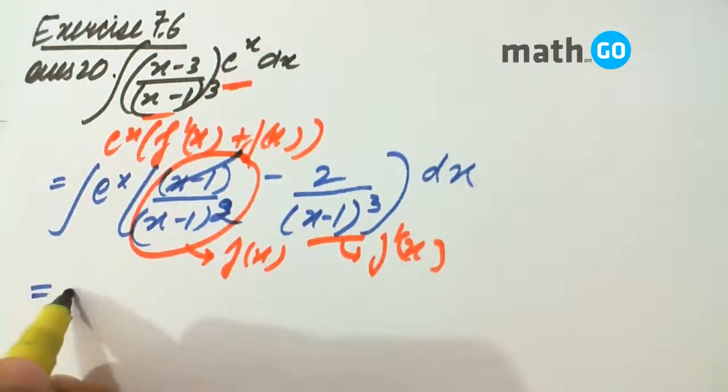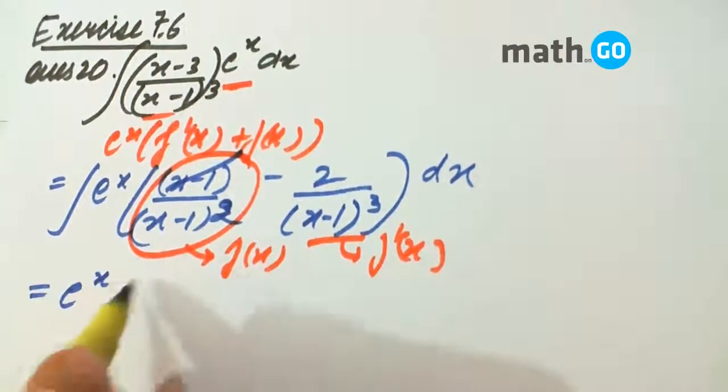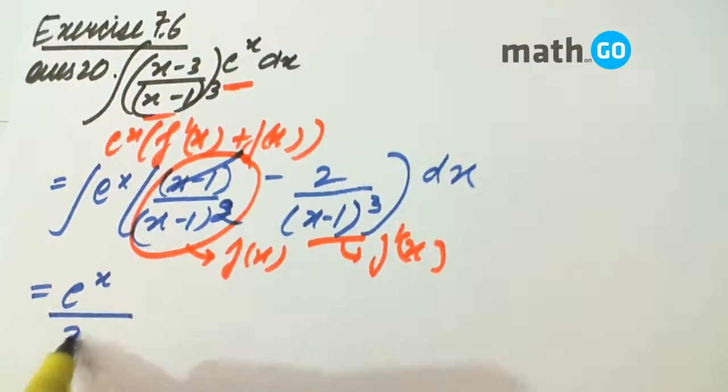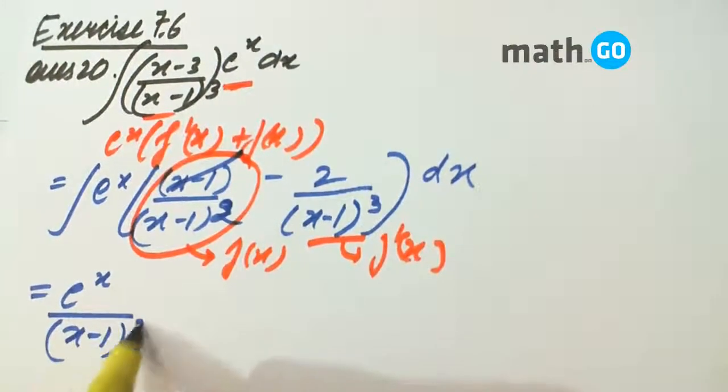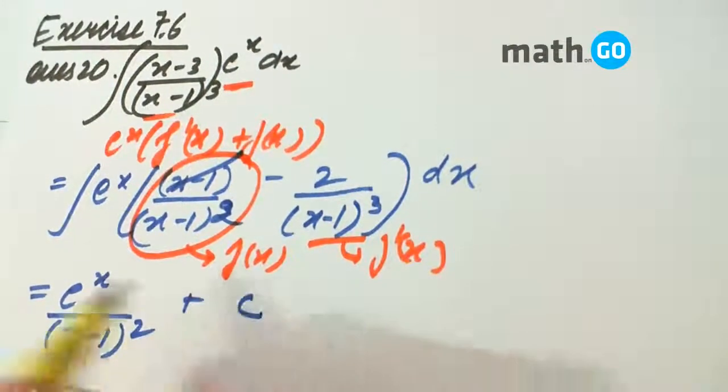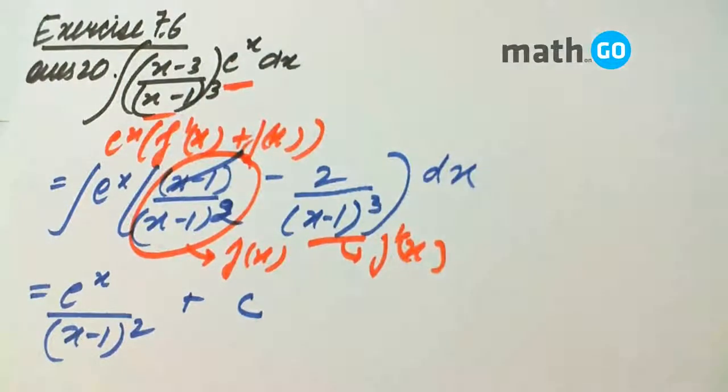So our answer is simple, that is e to power x into f(x), which is e to power x into 1 over (x minus 1) whole square plus C. Thank you.